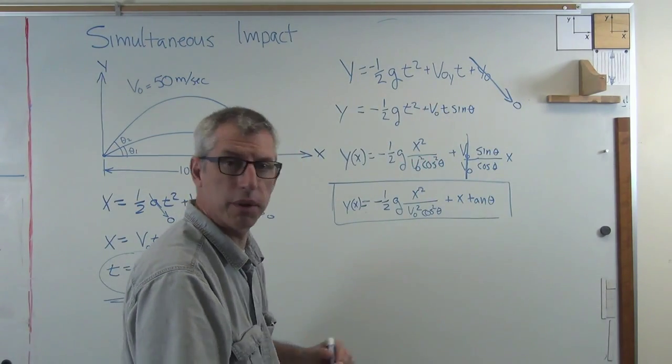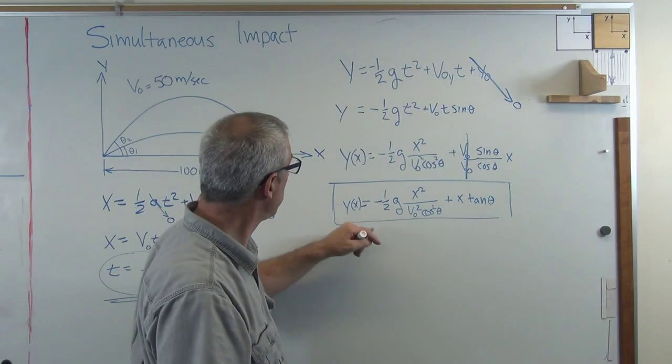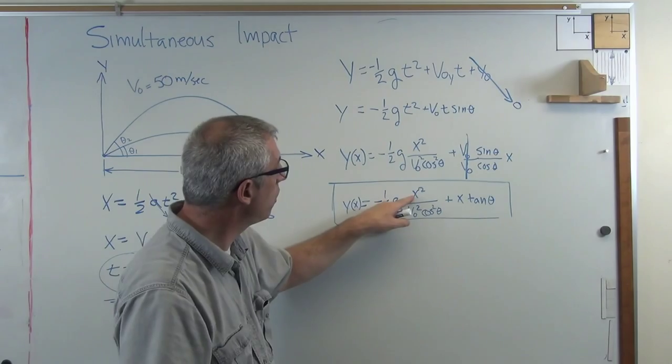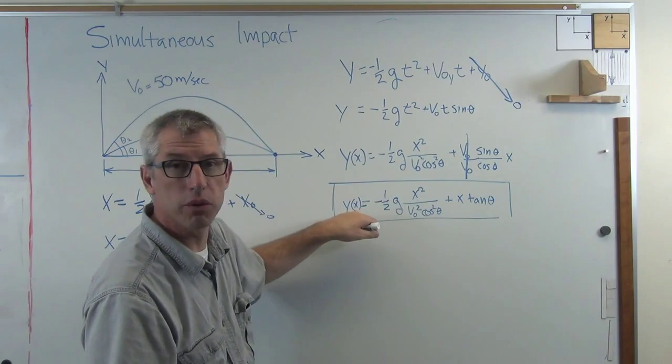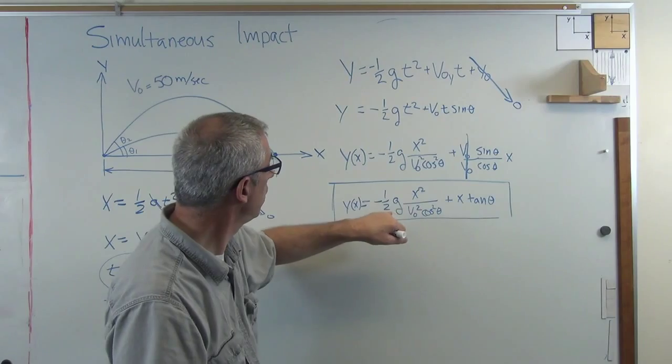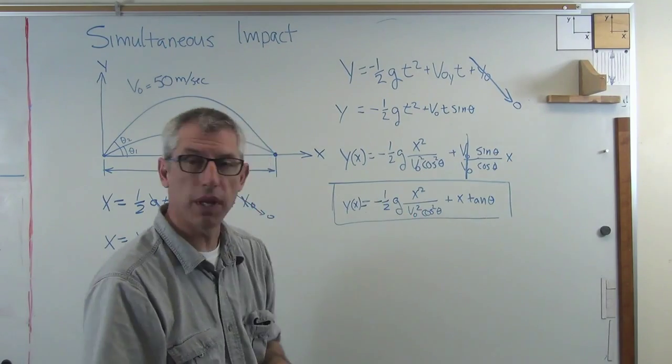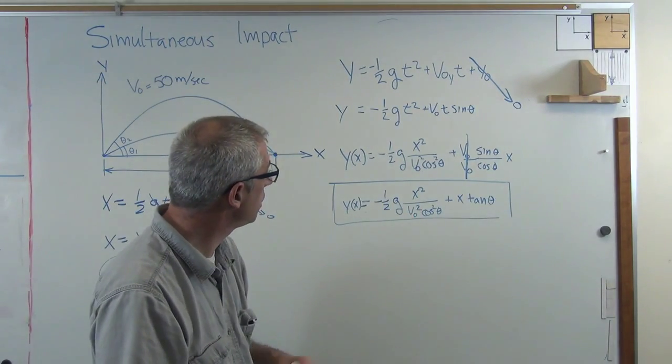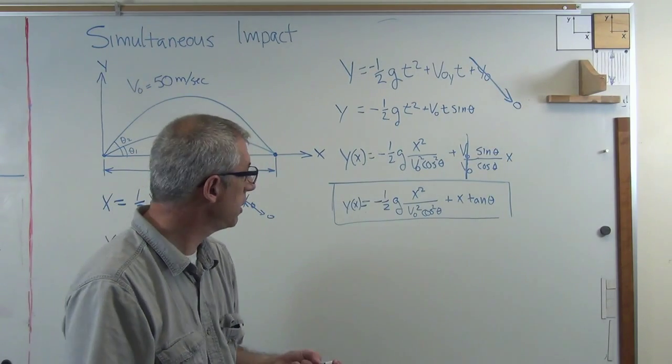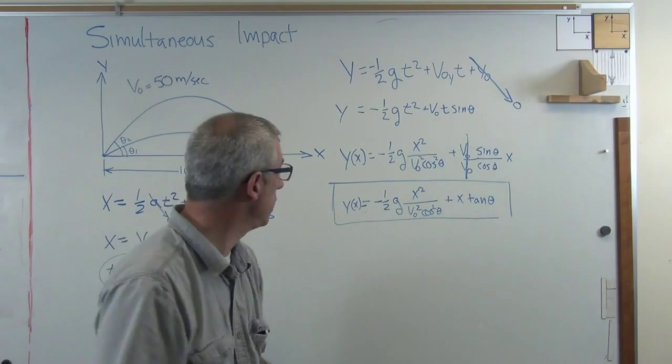Okay? Because what I get to do now, make sure I stay in frame, okay? What I get to do now is put in all the numbers I know. I know that at the target y equals zero. I know at the target x equals 100. And I know that the initial velocity is 50. So when I plug all those numbers in, I know g is 9.81. So when I plug all those in, what I'm going to get is an expression that has only theta in it. So let's write that out.